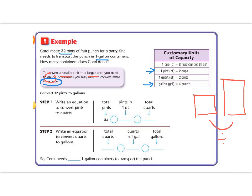It says write an equation to convert your pints to quarts. So it says 1 pint, well, 2 pints is 1 quart. So if I have 32 pints, I'm going to divide, because I'm getting something larger, by 2.